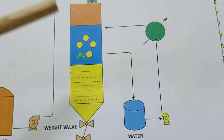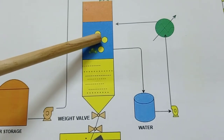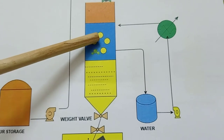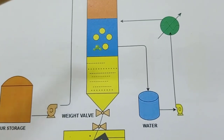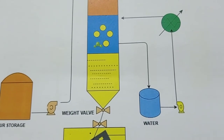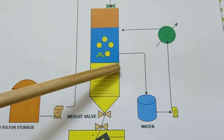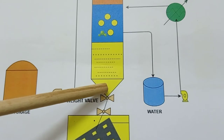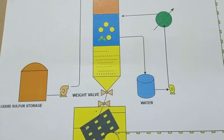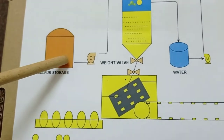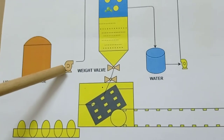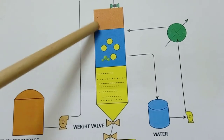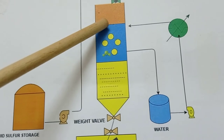Now let's look at the granulator. This is the granulator, and here you can see the water bath with spray nozzles that spray the sulfur in a circular or pellet form. With the help of a pump, we send liquid sulfur to the top of the granulator where the spray nozzles are located — many spray nozzles positioned above the water bath.